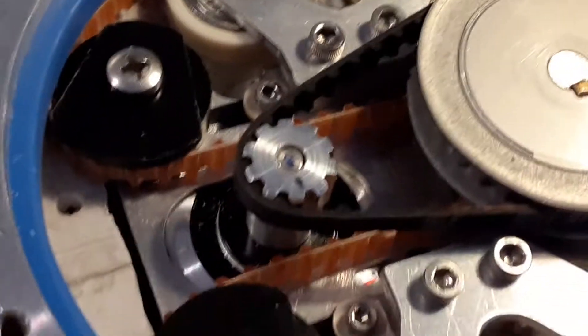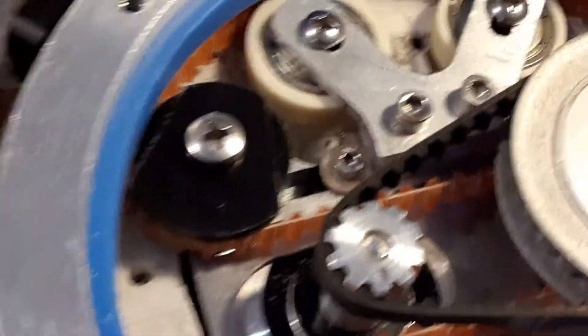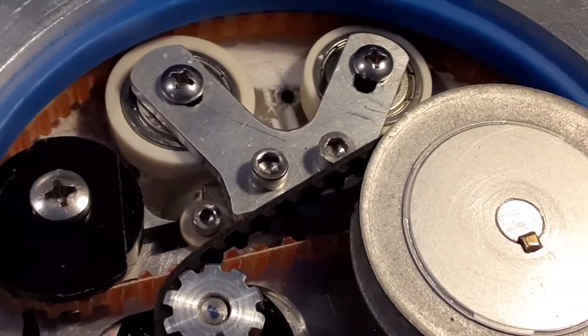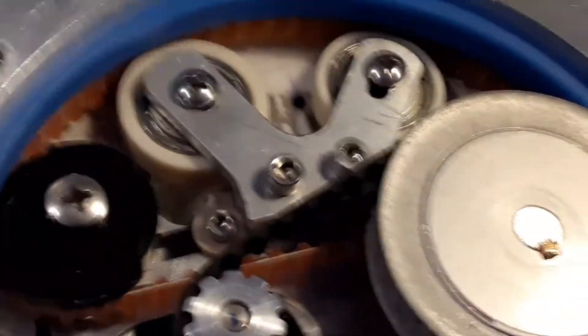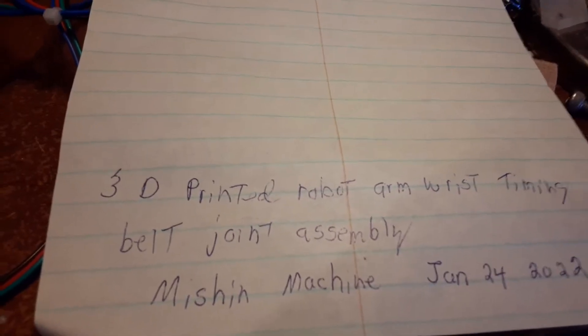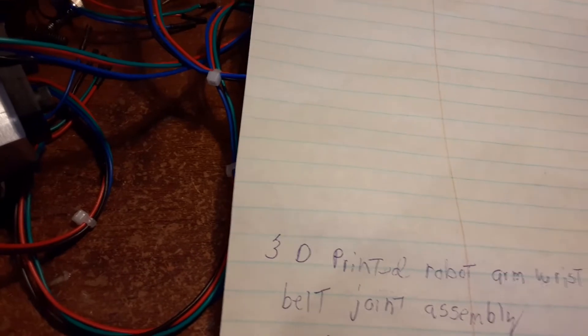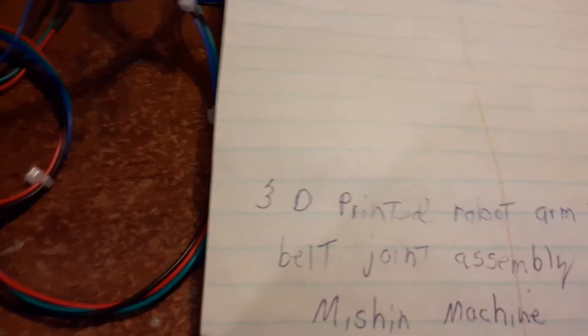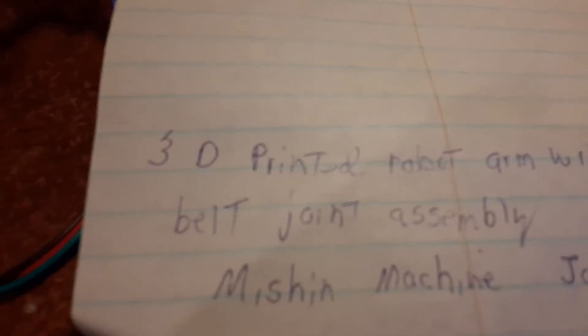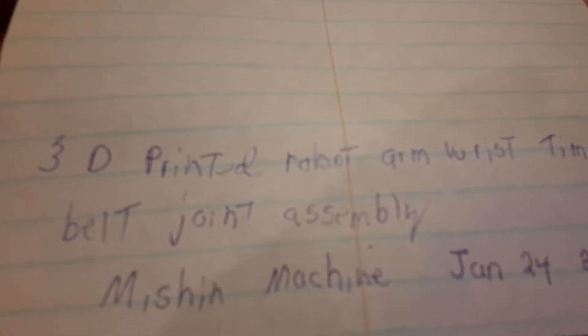So I had to come up with something different. Rather than redesign the wheel, I just had to find something and adapt it to fit this. So I found this 3D printed robot arm wrist timing belt joint assembly. If you go to that, you can see what I kind of patterned this off of.